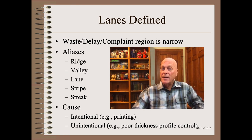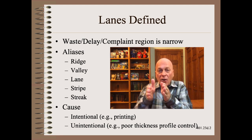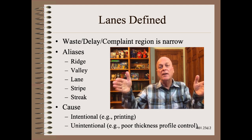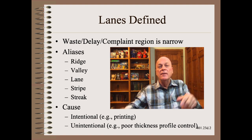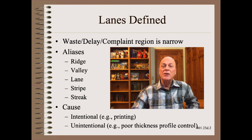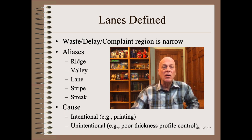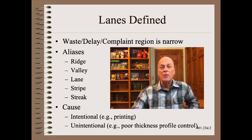A lane is defined as where the waste, delay, or customer complaint histogram is narrow compared to the width of the web. There may be more than one troubled lane in the web. The lane of trouble may come and go, though when it comes, it prefers a certain location for reasons you need to figure out. There are many aliases for this narrow troubled region.